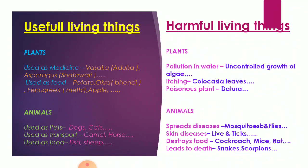Then we have useful living things and harmful living things. Some living things are useful and some are harmful. Plants: some plants are used for medicinal purposes, for example vasaka — that is adusa — asparagus, that is shatavari, and many more. Some plants are used as food, such as potato, okra — that is bhindi — fenugreek — we call it methi — apple, and many other fruits and vegetables.